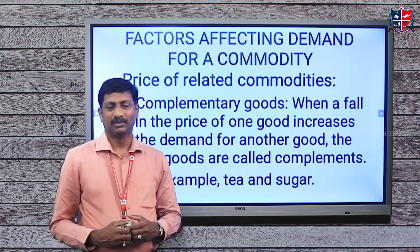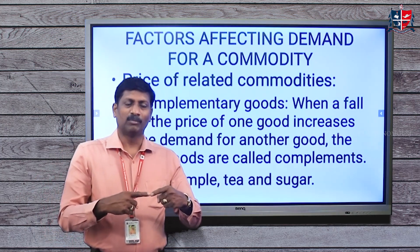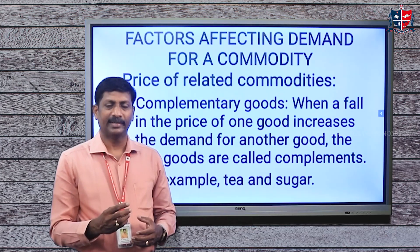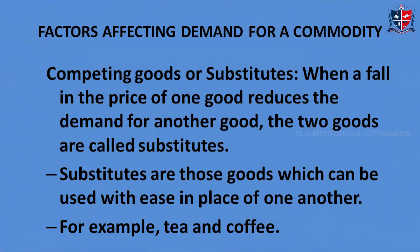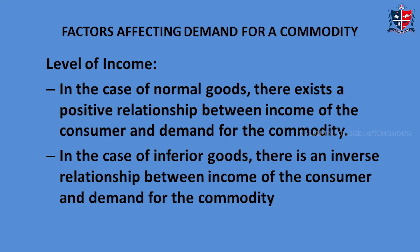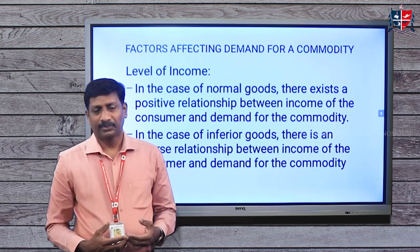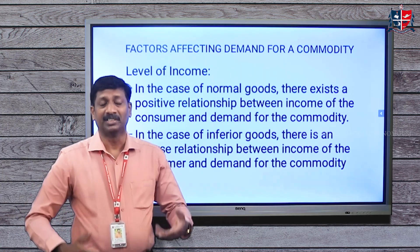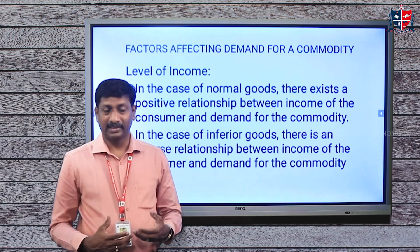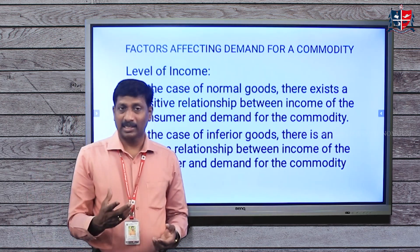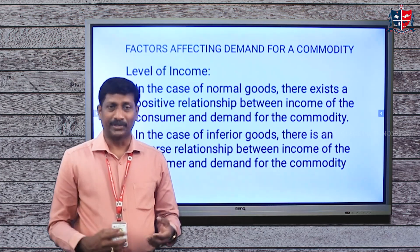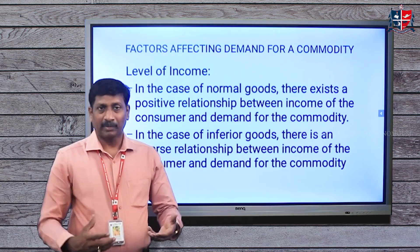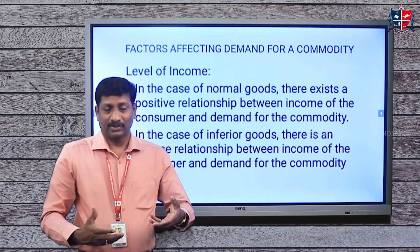Today we discuss the factors affecting demand for a commodity. The major factor determining demand is the price of the commodity. Normally, if other factors are constant — in Latin, ceteris paribus, meaning all things being equal — demand for a commodity is inversely related to its price. When price is more, less will be demanded; when price is less, more will be demanded. Price of the commodity is thus one of the most crucial factors influencing demand.